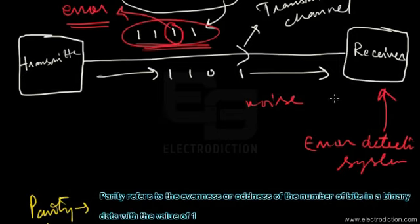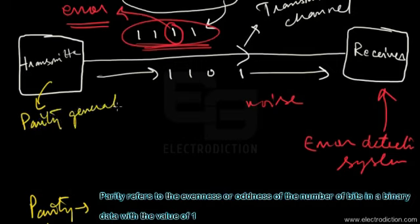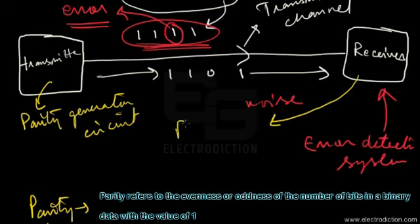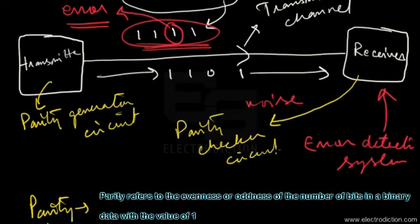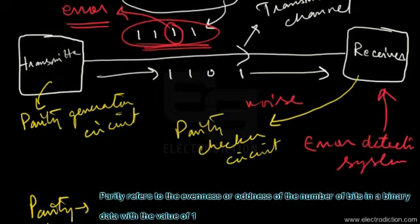For that reason, we require a parity generator circuit at the transmitting end and a parity checker circuit at the receiving end. In such a digital transmission system, there is a protocol as to whether the system works on even parity or odd parity, and correspondingly we have an even or odd parity checker at the output.